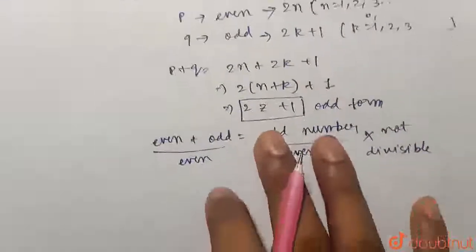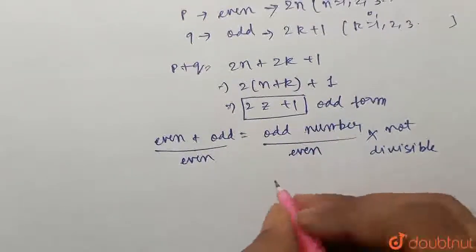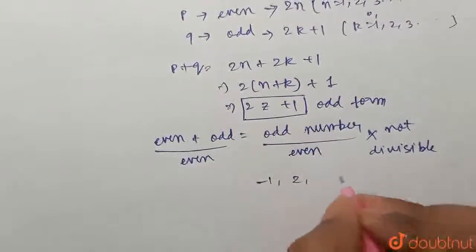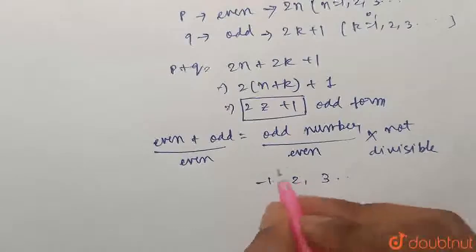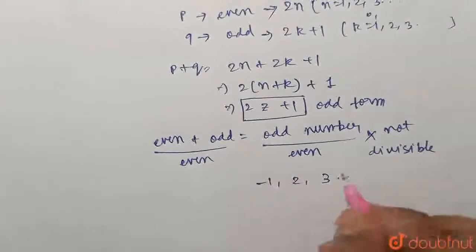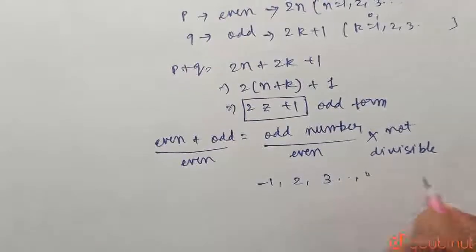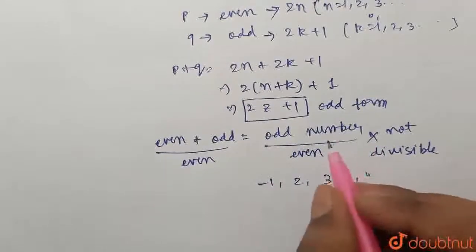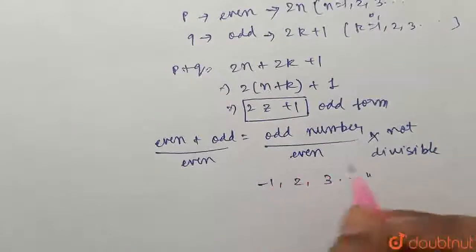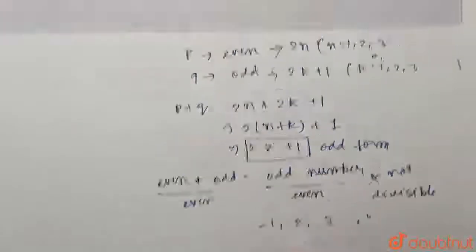Because basically integer means it needs to be completely divisible. What are integers? The integers are basically minus 1, 2, 3, basically whole numbers which can be negative or positive. So they should be perfectly divisible. But odd number upon even number can never be perfectly divisible. So this will not be an integer.